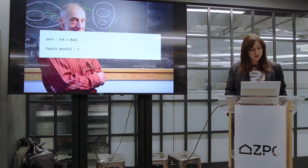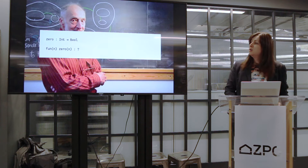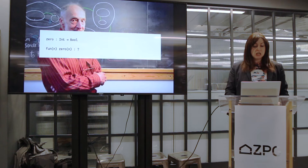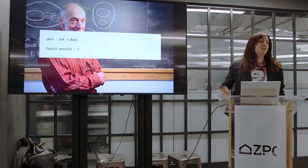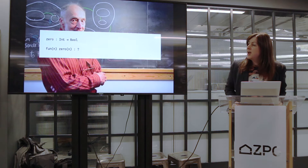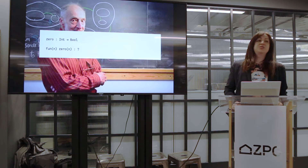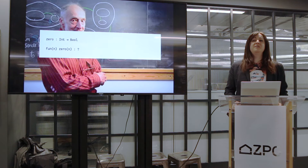Let's talk about functions. In our toy language, we have a function named zero which takes an integer as its argument and returns a boolean. We write that as zero colon int to bool. The syntax for defining a function is: fun, because obviously functions are a lot of fun. It takes an argument n and the body of the function follows, which is a zero of n — a function invocation. Can we deduce the type of this function? Int to bool.